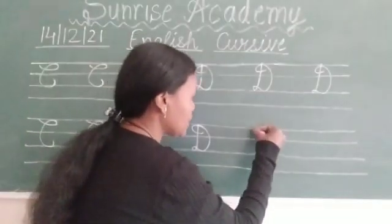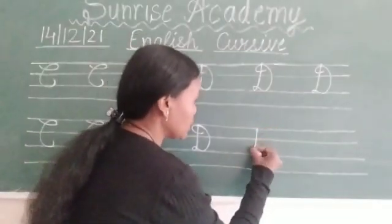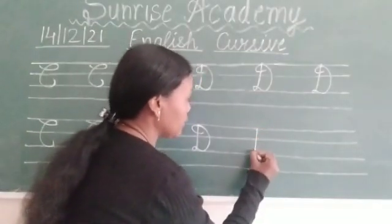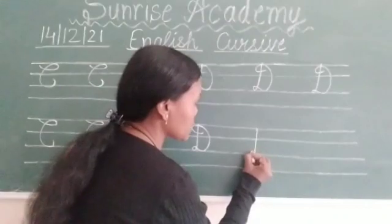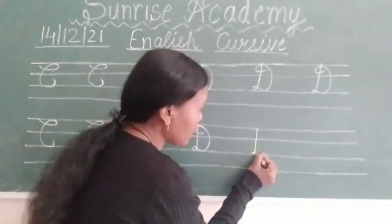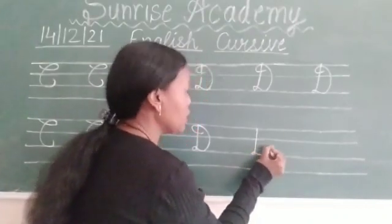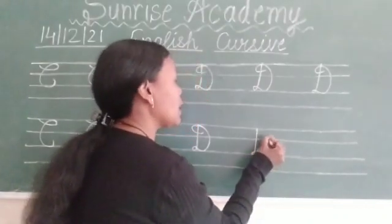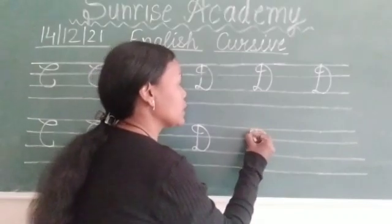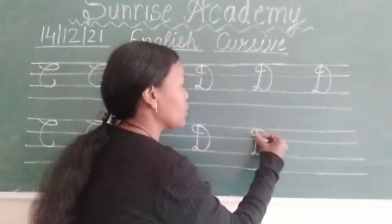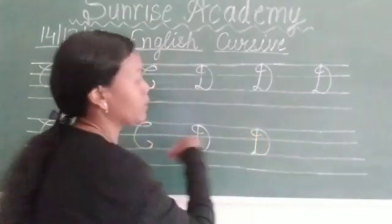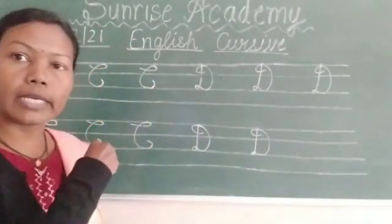Again, first line to third line. First से third line में जाएंगे, थोड़ा सा ऐसे turn करेंगे और फिर यहां से उपर की तरफ जाएंगे first line में और अंदर turn. ठीक है? ये हमारा हो गया D.